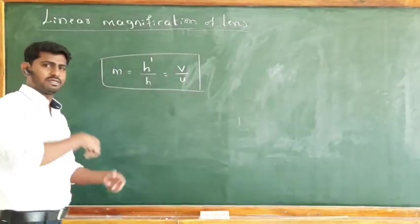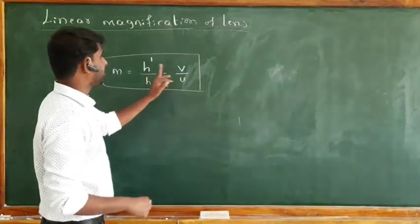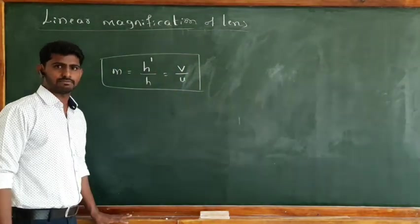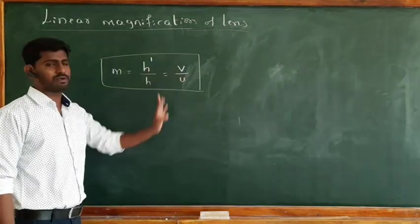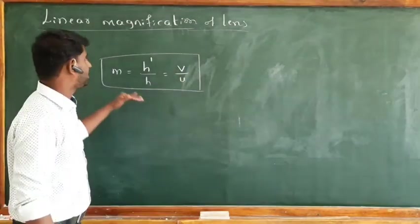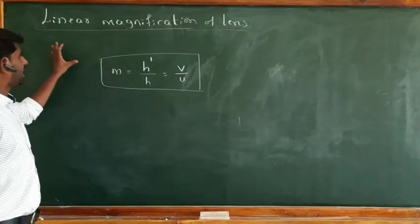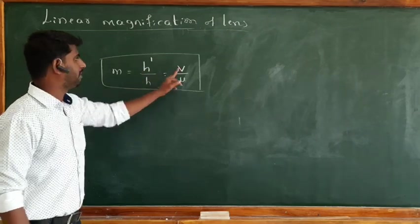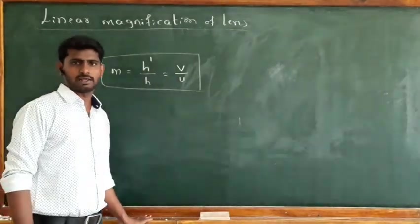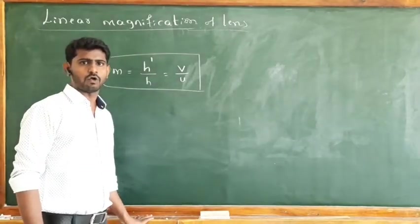In the case of a lens, M is equal to v/u. In the case of a mirror, there is a negative sign, so M equals minus v/u. But here, as per the sign convention for lenses, the term is v/u only.